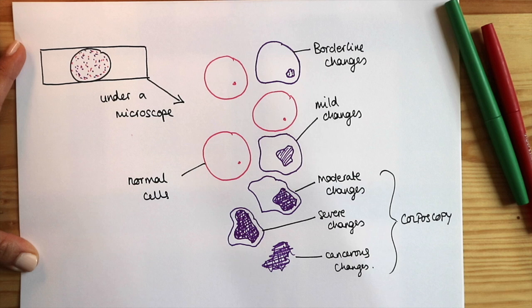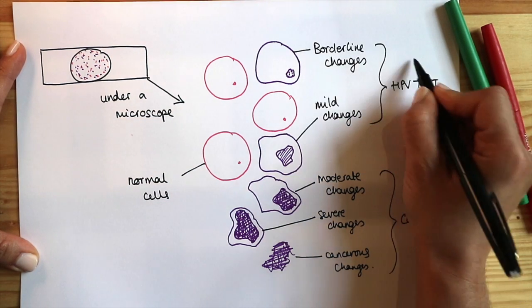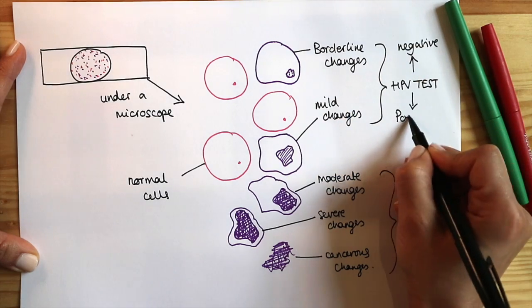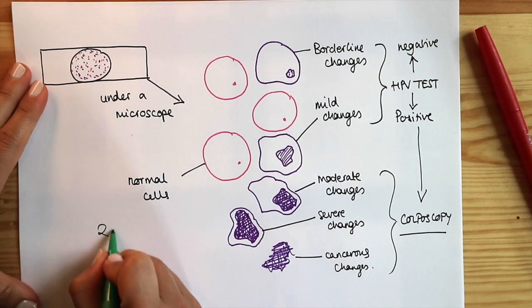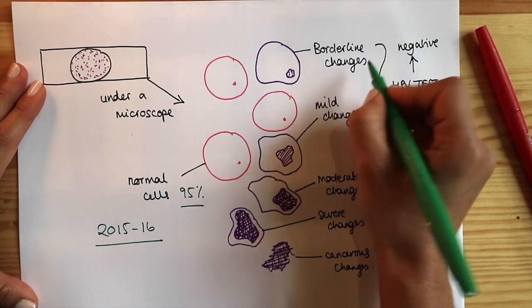If you have the latter three, moderate, severe or cancerous, you need to come to colposcopy so we can directly look at the neck of the womb. If you have borderline or mild changes, we do an HPV test and if it's positive, you come to colposcopy.